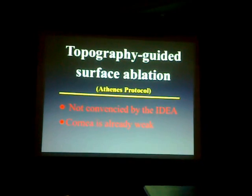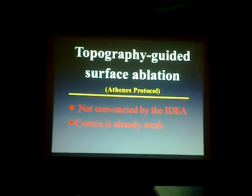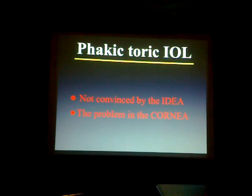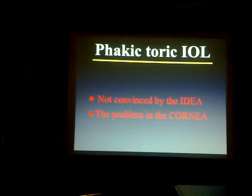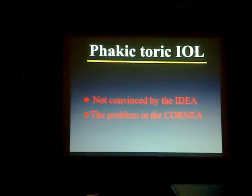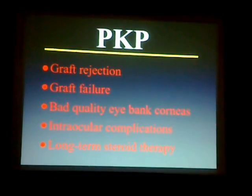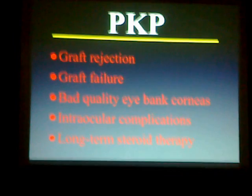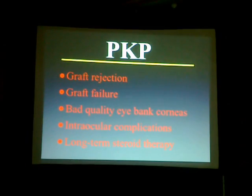For the topography-guided ablation and the Athens Protocol, I'm not convinced by the idea of weakening the cornea more, because the cornea is already weak. As regards toric intraocular lens implantation, I'm also not convinced, because the problem is in the cornea with irregular astigmatism, and treating a corneal problem by implanting an intraocular lens doesn't address it. With PKP, we know about the complications of graft rejection, graft failure, poor graft quality, and intraocular hemorrhage, and the long-term steroid use. All these things led me to come back to lamellar surgery as a good alternative treatment for keratoconus.